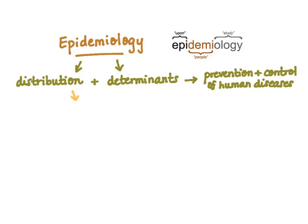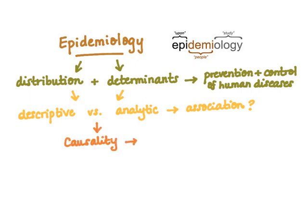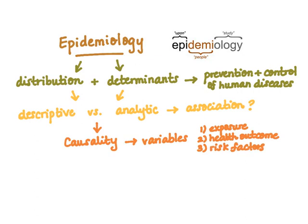We'll cover two types of epidemiologic studies: descriptive versus analytic — to determine whether an association exists between different disease-causing factors in order to establish causality. The variables we're referring to include three different types: one, your exposure variable; two, your health outcome; and three, risk factors.